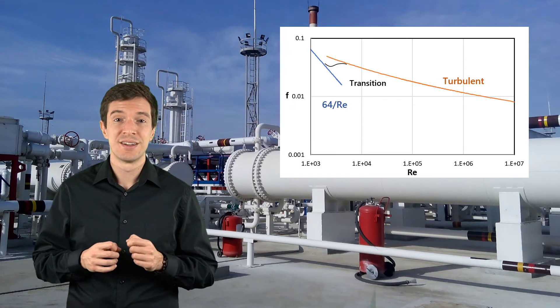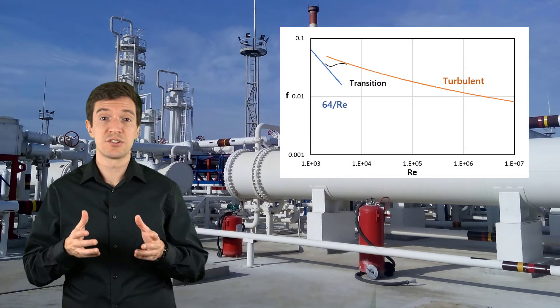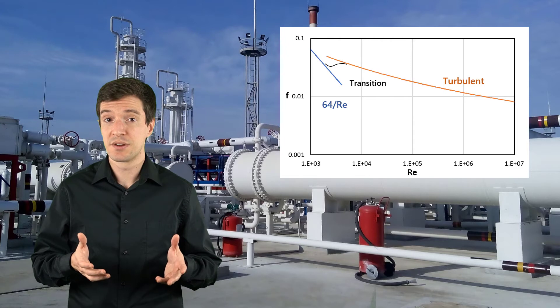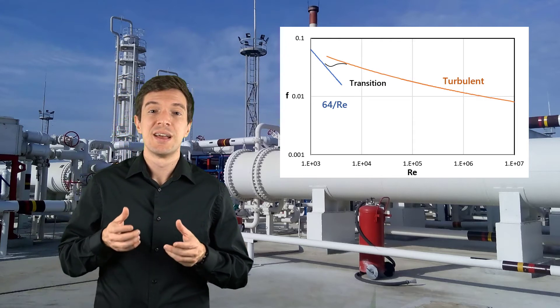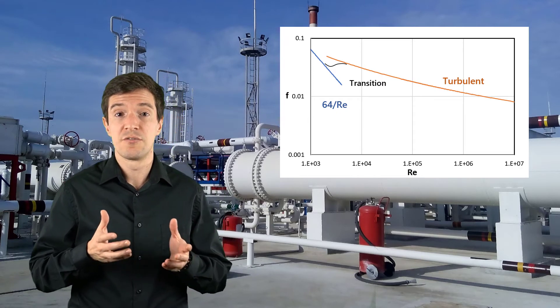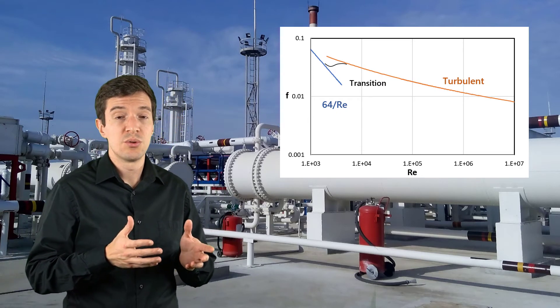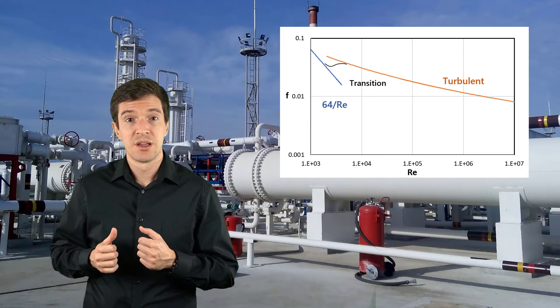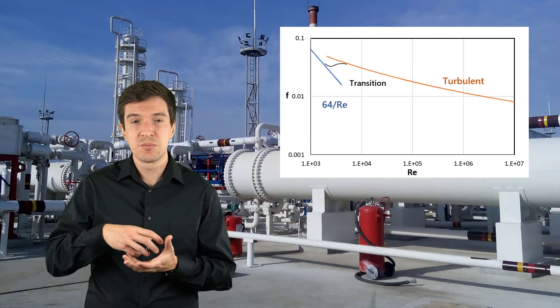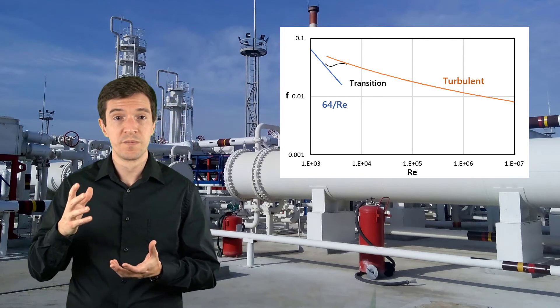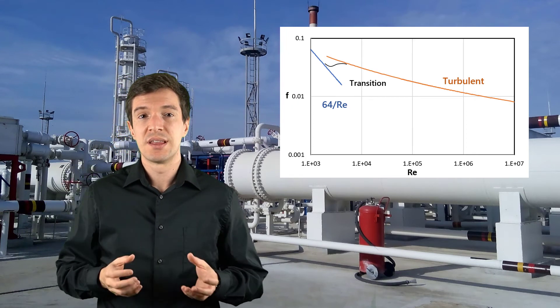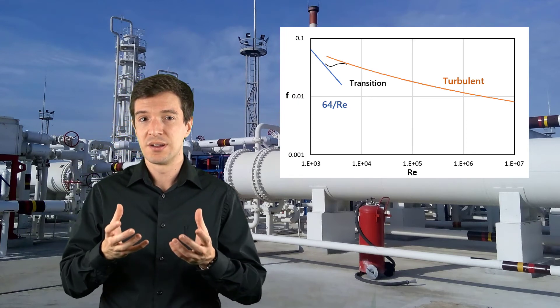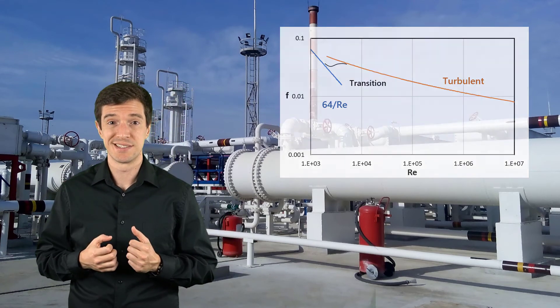Reported here is the variation of the friction factor with Reynolds number for laminar and turbulent flow. In the transition region of Reynolds number between 2000 and 4000, we have bursts of turbulence appearing in the flow. And this is a region that we typically try to avoid when designing a pipe system.